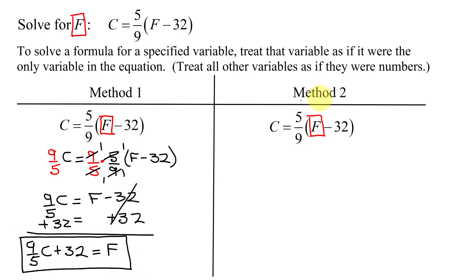Now, in method 2, I'm going to clear denominators by multiplying both sides of the equation by the LCD. The LCD is very easy to find when you have one denominator, that is the LCD, so it's 9.